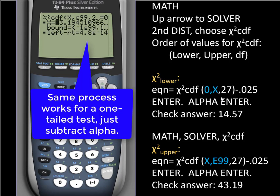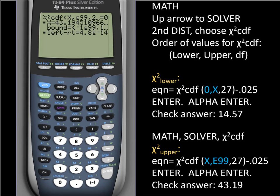You can run the same process to get a one-tailed chi-square critical value. You just don't need to split alpha in that case. I hope this has been helpful. Thank you.